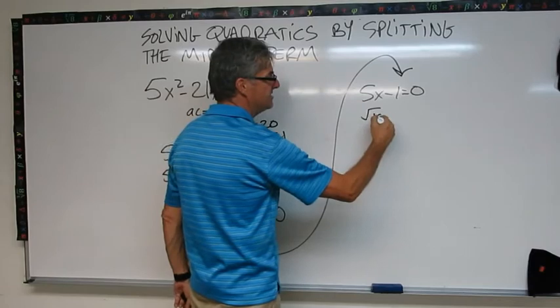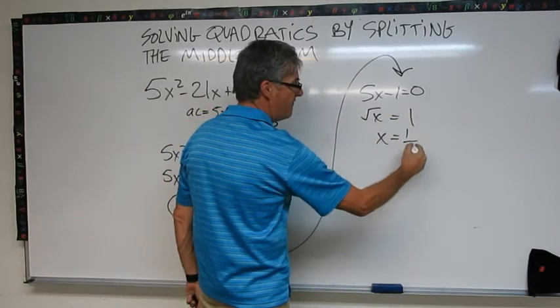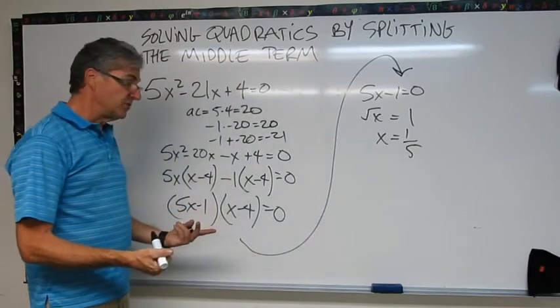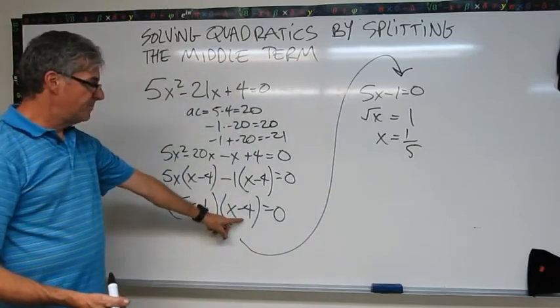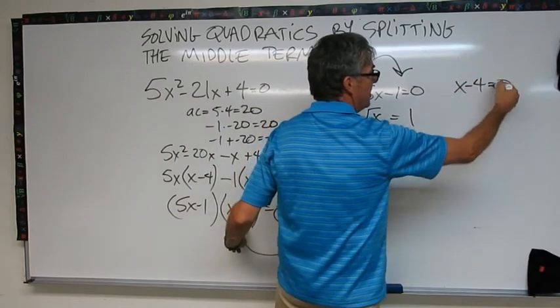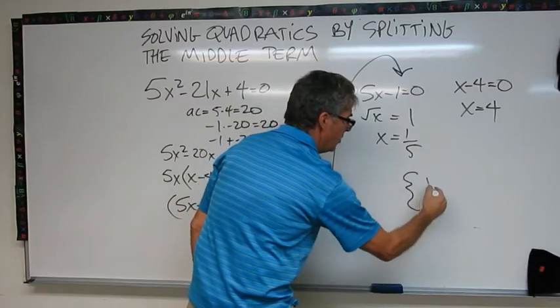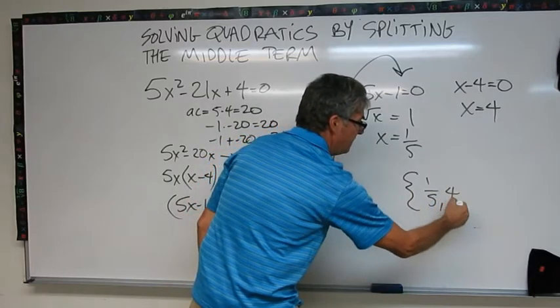I get 5x equals positive 1. x equals 1/5. So that's my first solution. Now I need to solve this branch. This is the x minus 4 equals 0 branch. This gives me x equals 4. So my two solutions here are 1/5 and 4.